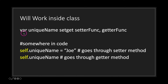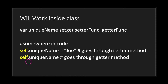If you do use the self keyword you will activate the setter and getter functions. We've declared a variable named unique_name, used the setget keyword, and assigned a setter function and a getter function. When we use the self keyword followed by dot notation followed by our class member and the assignment operator, we go through the setter method. If we use the self keyword followed by dot notation followed by the class member name without the assignment operator, we go through the getter method.